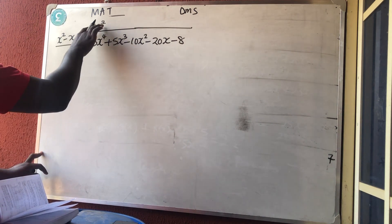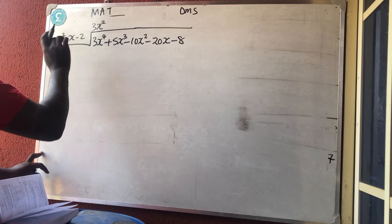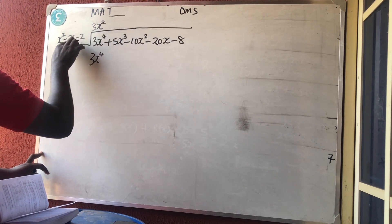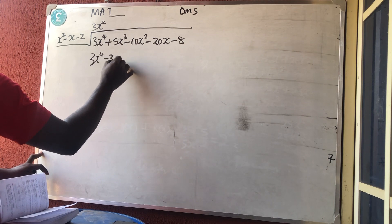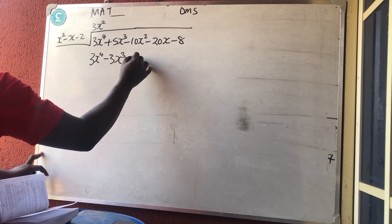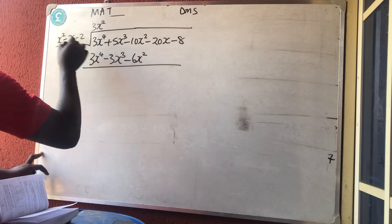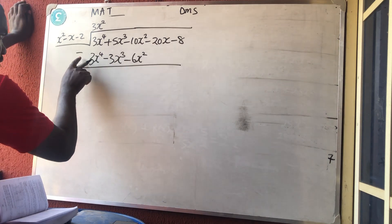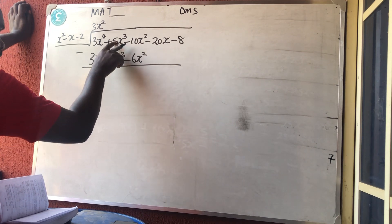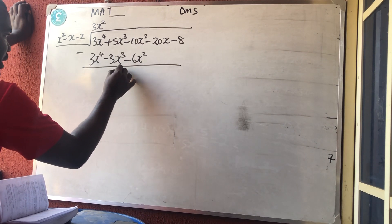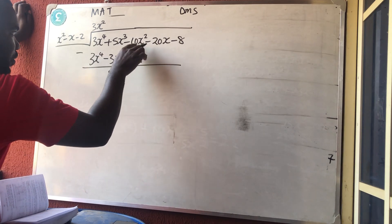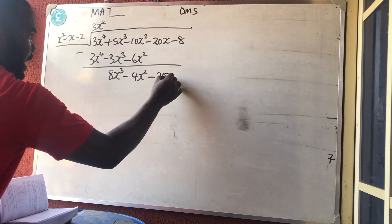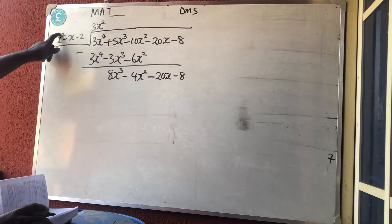Multiplication: 3x² times the divisor. 3x² times x² gives 3x⁴. 3x² times −x gives −3x³. 3x² times −2 gives −6x². Subtraction: 3x⁴ − 3x⁴ = 0. Minus times minus is plus, so 5 + 3 = 8x³. Minus times minus is plus, so −10 + 6 = −4x². Bring down −20x and −8.